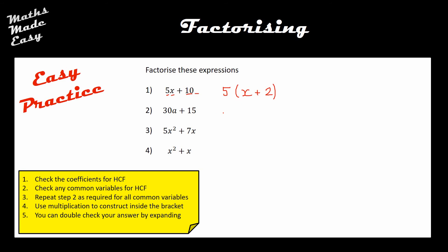Question two: the highest common factor of 30 and 15 is 15. There are no common variables, so I skip straight to building the bracket. I times 15 by 2a to make 30a. This one catches people out: what do I times by 15 to make 15? It cannot be zero or nothing — I times 15 by 1 to make 15.